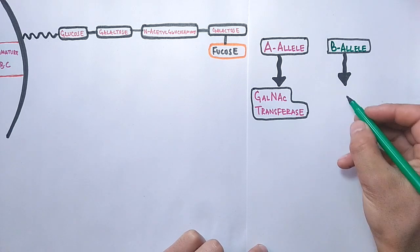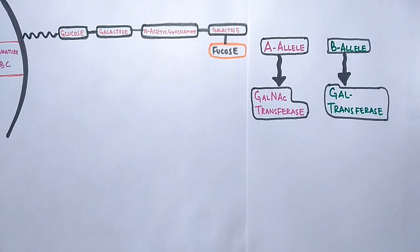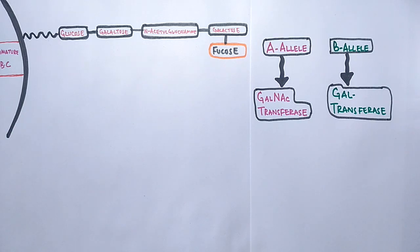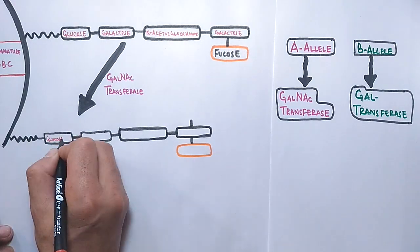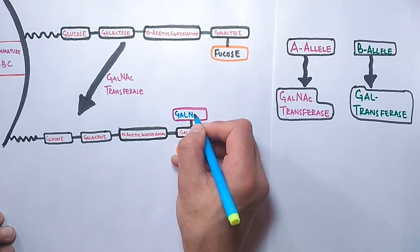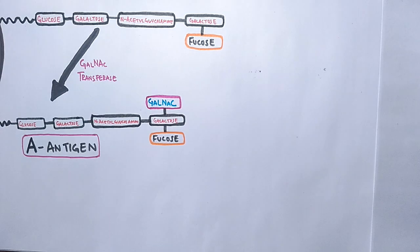The RBC has precursor molecule in the form of H antigen on its surface as shown in the figure, and to that GalNAc transferase catalyzes the reaction of transfer of GalNAc or simply N-acetyl galactosamine. This catalyzes the formation of A antigen from H antigen.